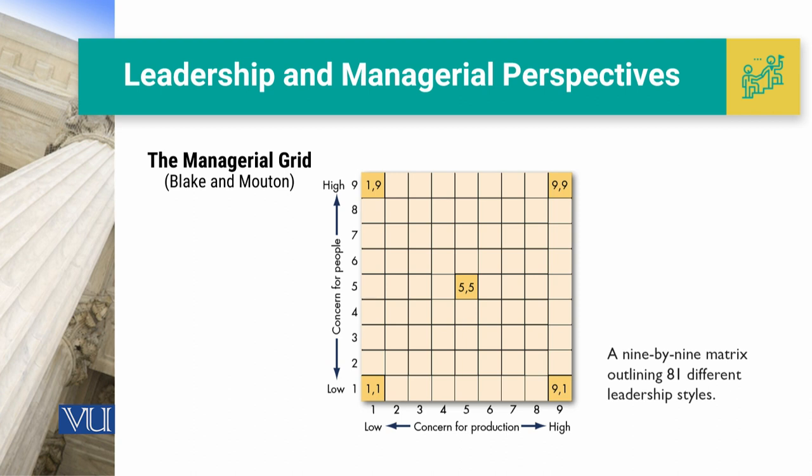In this nine by nine matrix, as you can see on the slide, we have five main areas with different concerns related to concern for people and concern for production. The five quadrants identified are: one-one, one-nine, five-five, nine-one, and nine-nine. On the x-axis, one-one means concern for production is low and concern for people is also low. When we mention nine-nine, concern for production is high and concern for people is also high.